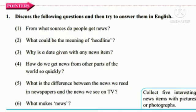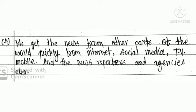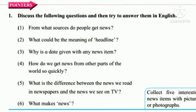Question 4: How do we get news from other parts of the world so quickly? How do we get news of events from other parts of the world so fast? The answer is: we get the news from other parts of the world quickly from internet, social media, television, mobile, and the most important thing is the news reporters and news agencies give us this news so quickly.